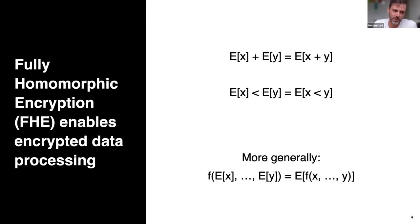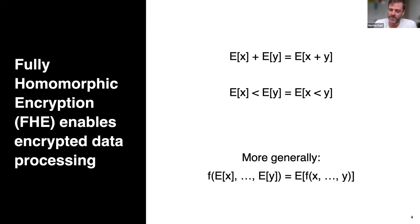Our solution to this is using fully homomorphic encryption. The general idea, as you probably know, is you can compute on data while it remains encrypted. So you can have an encryption of X and encryption of Y, then do a homomorphic operation on these and obtain an encryption of X plus Y. Likewise, you can do a homomorphic comparison and arrive at a ciphertext indicating whether X was smaller than Y. More generally, you can apply a function to ciphertexts and end up with an encryption of that function applied to the plaintexts.